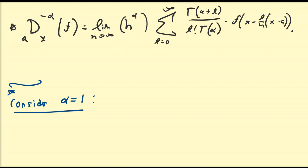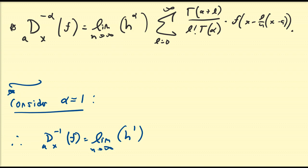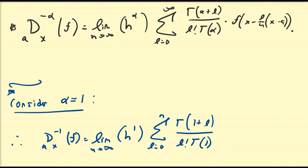Hopefully we can show that the negative first derivative is pretty much like an integral of some sort. So when alpha equals one, we have d_ax to the negative first of f equal to the limit as n goes to infinity of h to the first times the sum from l equals zero to n of gamma(1 plus l) all over l factorial times gamma(1) times f of x minus l times h.